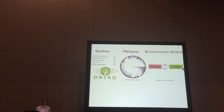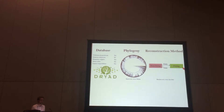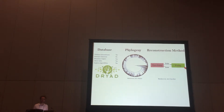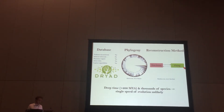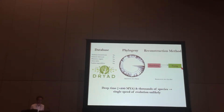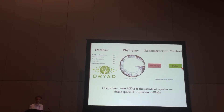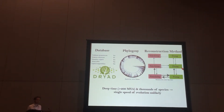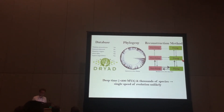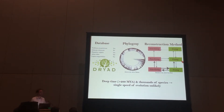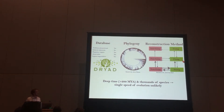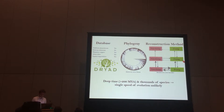The problem with traditional methods of reconstruction, when you're reconstructing a phylogenetic trait, is that they typically assume a single rate of gain and a single rate of loss all over the phylogeny. But when you study a complex trait over deep time — like 200 million years — across thousands of species, a single speed of evolution is actually quite unlikely. So we used a new method called hidden rate models, which allows for multiple speeds of evolution — for instance, a very high rate at the bottom and a much lower rate at the top of the phylogeny.